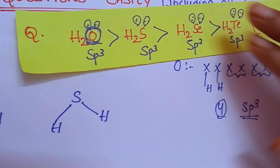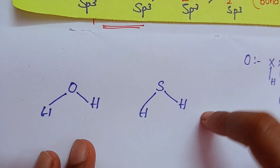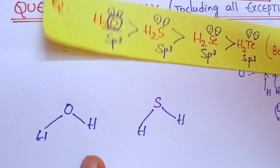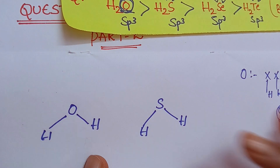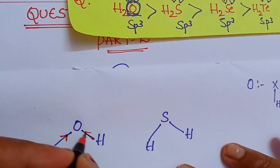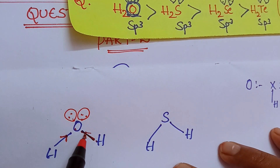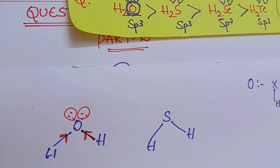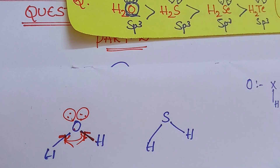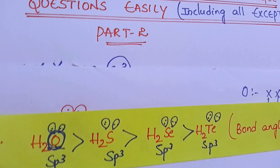A link for a 2-minute hybridization video will be in the description — watch that. In these two molecules, hybridization is the same, lone pairs are the same, bonded atoms are the same, only the central atom is different. This comes under trick number 3. If electronegativity increases, oxygen draws the bonded pair electrons toward it. When the electron pair comes closer to the central atom, repulsion is more, so bond angle is more. From top to bottom, as electronegativity of the central atom decreases, bond angle decreases.